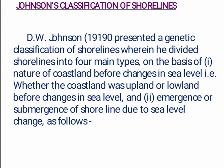Johnson's Classification of Shorelines: D.W. Johnson in 1919 presented a genetic classification of shorelines wherein he divided shorelines into four main types, on the basis of the nature of coastlands before changes in sea level — whether the coastline was upland or lowland before the change in sea level — and emergence or submergence of shorelines due to sea level changes.